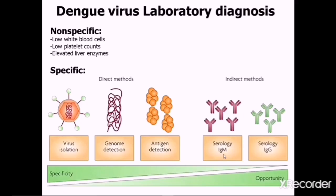Indirect serological methods include IgM serology, which is useful after six days, and IgG by ELISA using paired sera — the first sample taken between one to five days of disease and the second after 15 days. Direct methods are more useful in the first five days, while indirect methods are more useful from day six onwards.